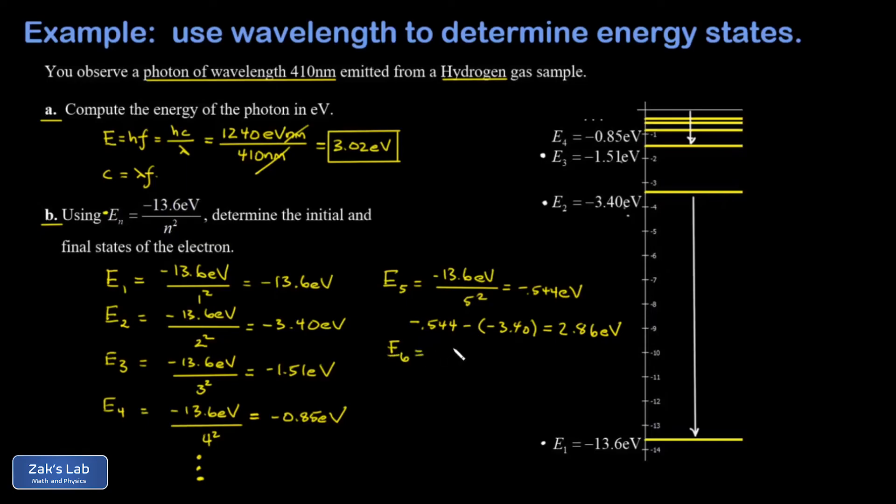Then we look at the n equals six state. That gives me negative 0.378 eV. If I look at the difference between this and the n equals two state, I arrive at the transition I was looking for. If an electron transitions from the n equals six state down to the n equals two state, the difference in energy is 3.02 electron volts and the photon that's emitted from that process will carry away the 3.02 electron volts of energy.